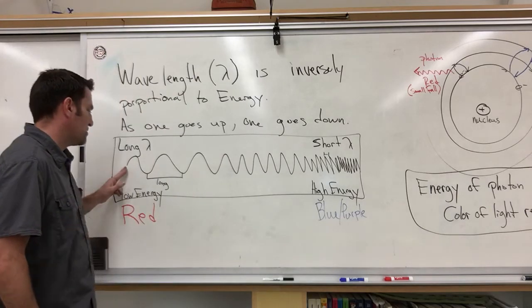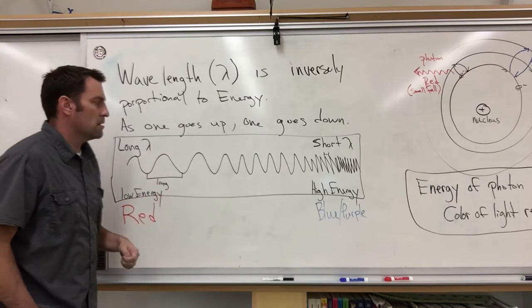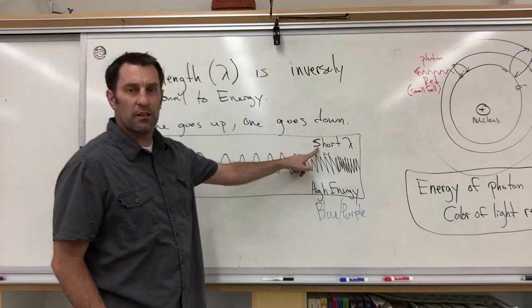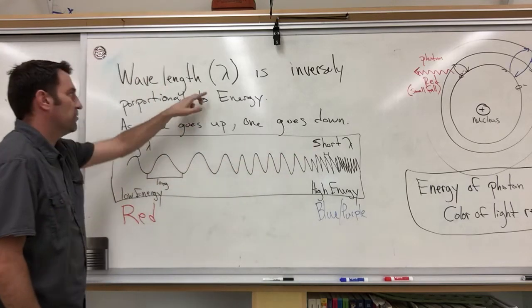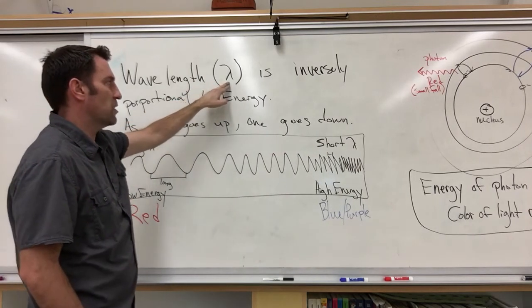As you can see, I've drawn this. These represent wavelengths that are long. Now, this represents wavelengths that are short. Wavelength is symbolized by this little thing right here called lambda. So that always means wavelength.